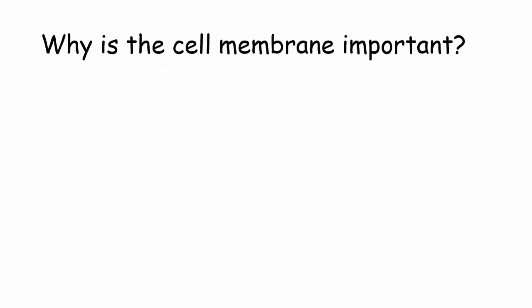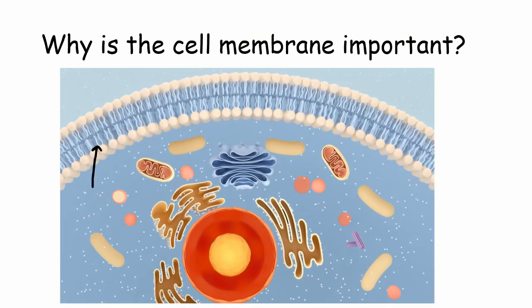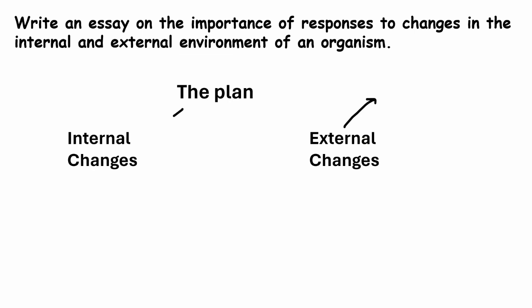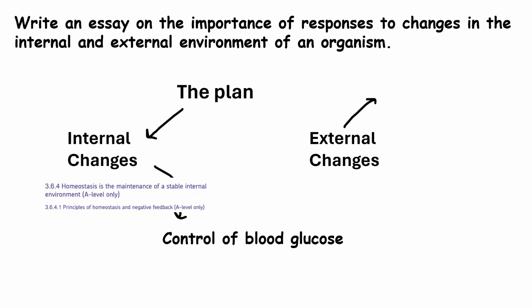For example, take the question: why is the cell membrane important? Your AO1 would be explaining that it's a phospholipid bilayer — the nonpolar tails only allow nonpolar or small molecules through, and do not allow polar molecules like glucose and amino acids in. Your AO2 would then explain the importance: if glucose could all rush in uncontrolled, it could lower the water potential of the cell, causing it to swell or shrink.